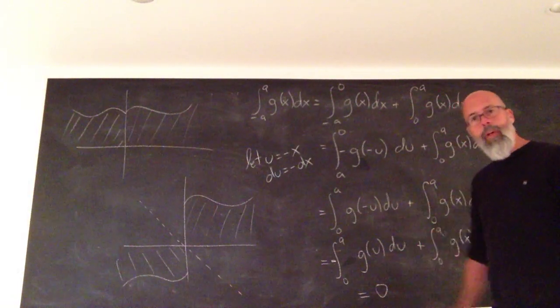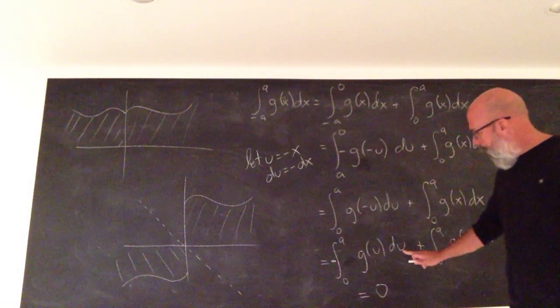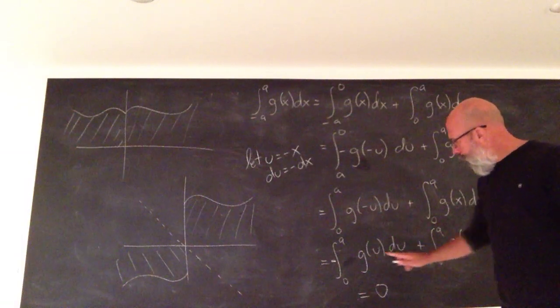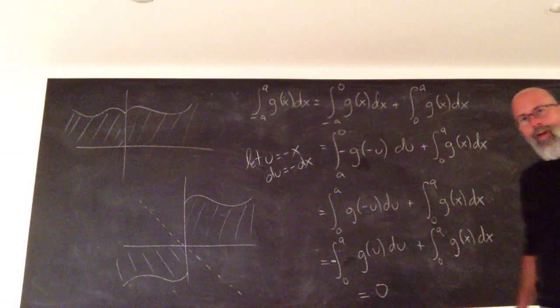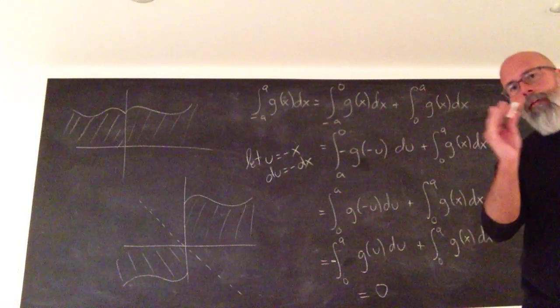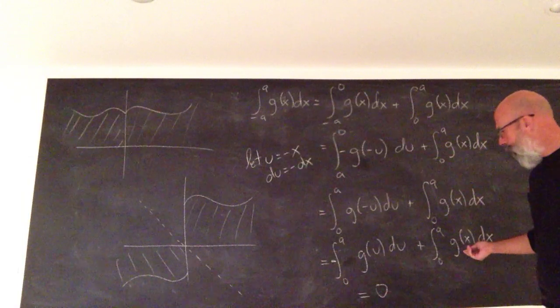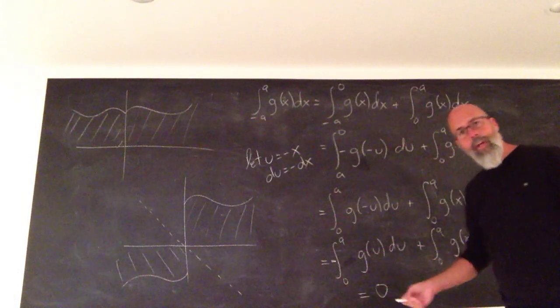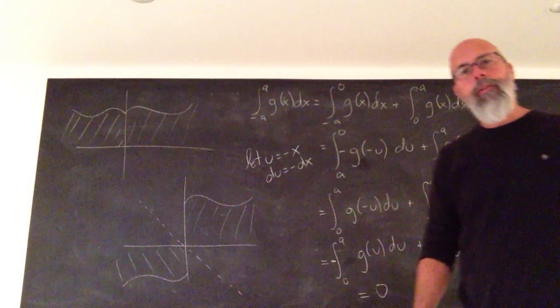Some of you may be worried. Again, this integral is in terms of U, that one is in terms of X. But U or X are just dummy variables here. The integrals themselves will have the same numerical value. One of them is positive, one of them is negative. They add to 0.